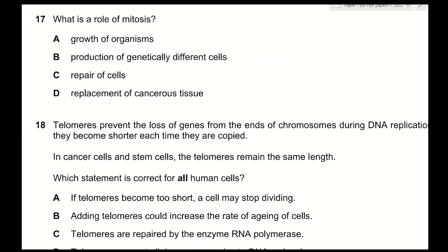Question 17: what is a role of mitosis? A — growth of organisms — correct: as cells keep dividing, cell numbers increase and the organism grows. B — production of genetically different cells — incorrect: mitosis produces genetically identical cells. C — repair of cells — incorrect: it's tissues that are repaired, not individual cells. D — replacement of cancerous tissue — incorrect: cancerous tissue keeps growing via mitosis and is not replaced. The answer is A.